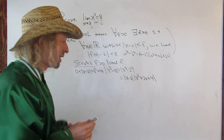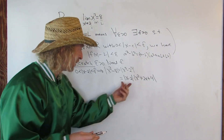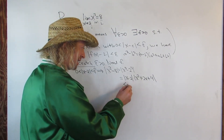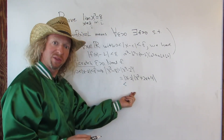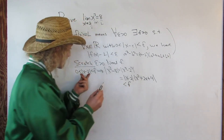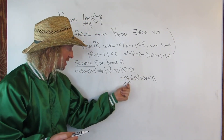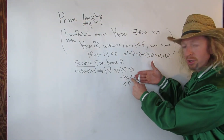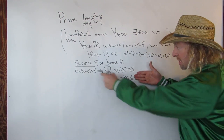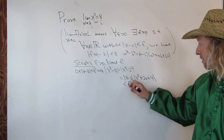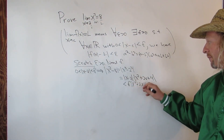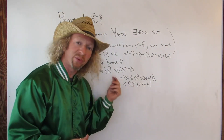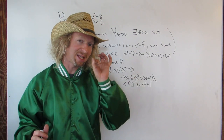Now we're at the hard part of the problem. We know that the absolute value of x minus 2 is less than delta, so we're allowed to put a less-than here and replace that absolute value with delta. Why? Because this is less than delta, so this whole thing is less than delta times the second factor. So we can just put a less-than and a delta. All we're doing is multiplying both sides by that quantity. Now we need to somehow get rid of these x's — we need the whole expression to be less than epsilon.